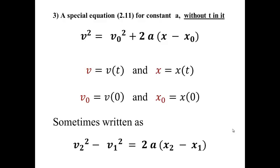It's also written this way where you can see very clearly that the v₂ is associated with the x₂, that is, they both have to be at the same time, and v₁ is associated with x₁, that is, a velocity at that time and a position at that time.